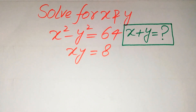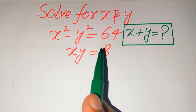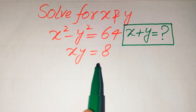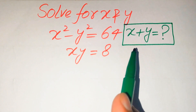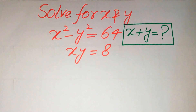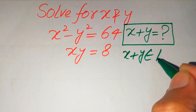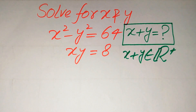Hello everyone. How to solve this problem for the values of x and y if we have x² - y² = 64 and xy = 8. We solve this problem for the values of x + y, where x + y must belong to positive real numbers, meaning we solve only for positive real values of x + y.